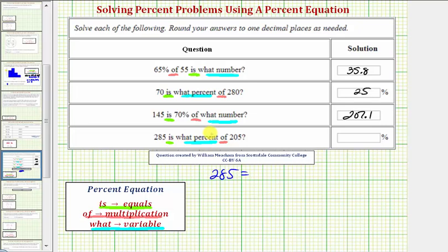Then we have 'of 205', so we have times 205. So we have 285 is equal to 205p. So to solve for p, we divide both sides by 205.